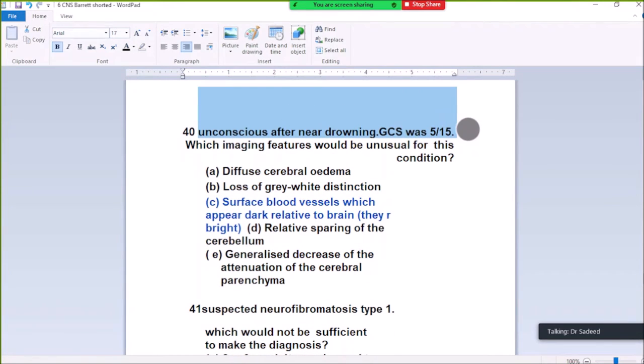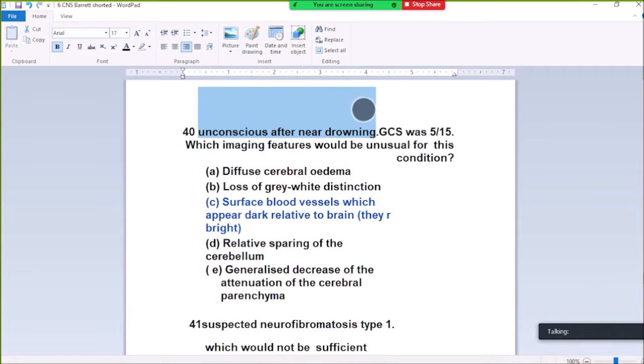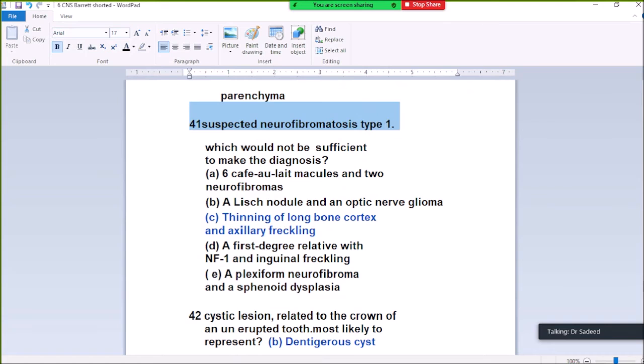Question 40. Incontinence after near drowning, GCS was 5 out of 15. With hypoxia, the most unusual finding is cerebral blood vessels which appear dark. They are normally bright on imaging. In drowning with hypoxia, the cerebral blood vessels should be bright generally, but here this abnormal, unusual finding is cerebral blood vessels which appear dark. Question 41. Suspected neurofibromatosis Type 1. Which would not be sufficient to make the diagnosis? Thinning of the long bone cortex and axillary freckling. In NF1, not only these two findings, but you also have to have some kind of optic nerve glioma. Thinning of long bone cortex and axillary freckling is not sufficient to make a diagnosis of NF1.